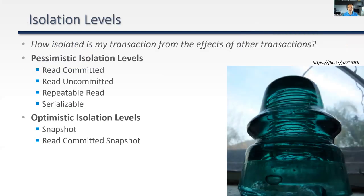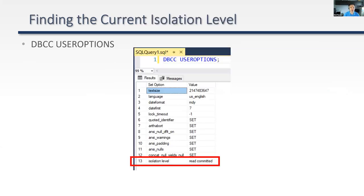So what is an isolation level? In short, it determines how isolated your transaction is from the effects of other transactions. There are four pessimistic isolation levels: read committed, read uncommitted, repeatable read, and serializable. There are two optimistic isolation levels: snapshot and read committed snapshot. If you're not sure what isolation level you're using, run DBCC USEROPTIONS — it will return a whole bunch of settings for your connection, including an isolation level row. In this example, the connection was in read committed.